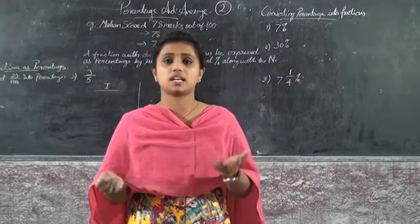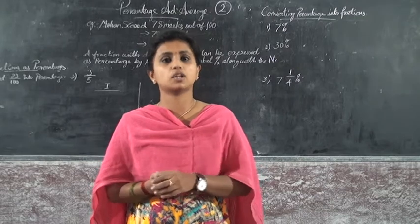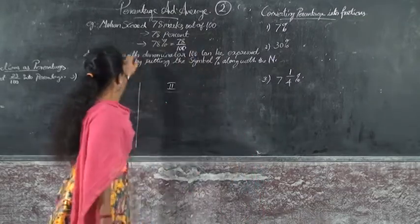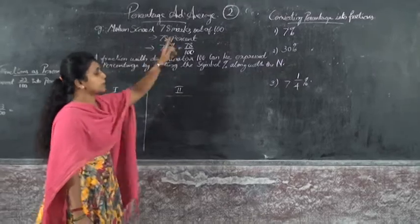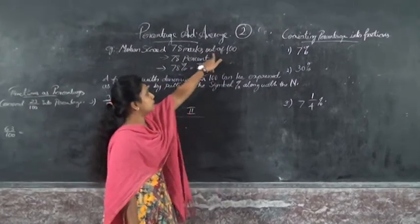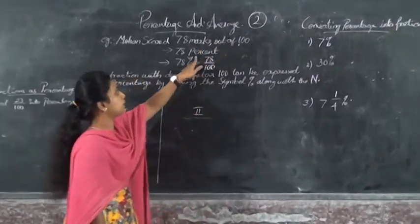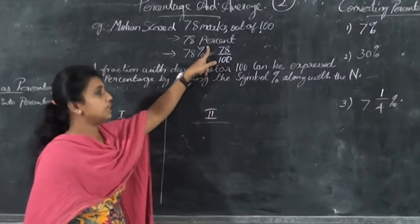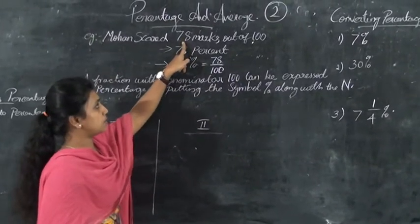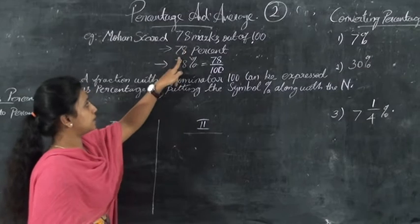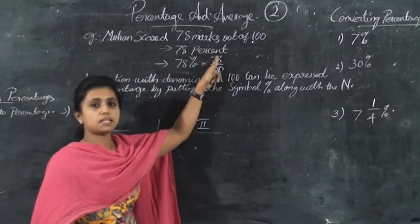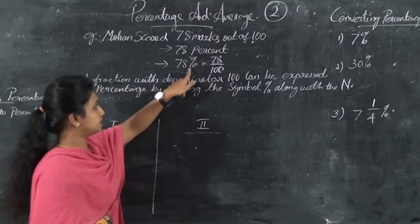You can see 78 and 68. Now look at this example here. Mohan scored 78 marks out of hundred. Here, 'out of hundred' means percent. So 78 marks out of hundred can be converted to 78 percent.